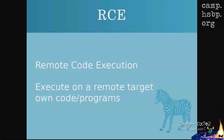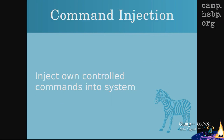RCE stands for remote code execution — you're able to execute your own code or programs on a remote target. There's also command injection, where you inject your own controlled commands into a system, locally or remotely depending on the bug. A common example is a router's CLI ping command where you can also inject bash commands and execute them on the router instead of just pinging a website.